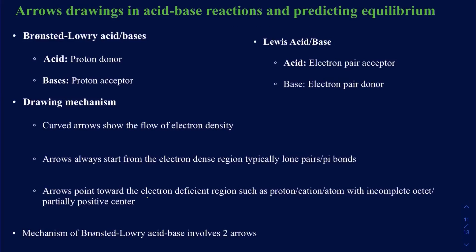In this lecture, we're going to be learning how to draw the arrows on an acid-base reaction. In addition to that, we will also talk about how to predict the equilibriums of those acid-base reactions — another way of saying whether those reactions are going to be product-favored or reactant-favored.